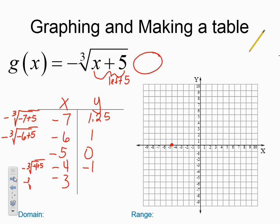Negative cube root, negative 3 plus 5. That's the negative cube root of 2 again. So that's 1.25.